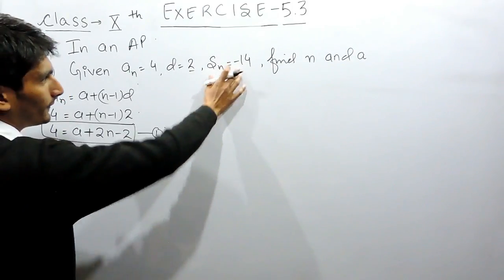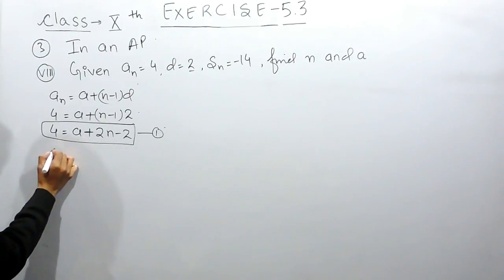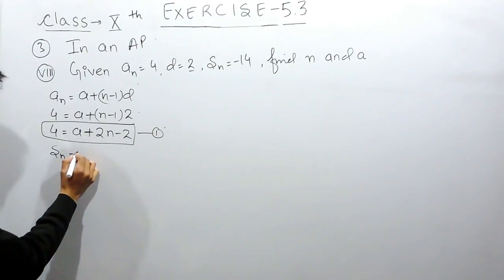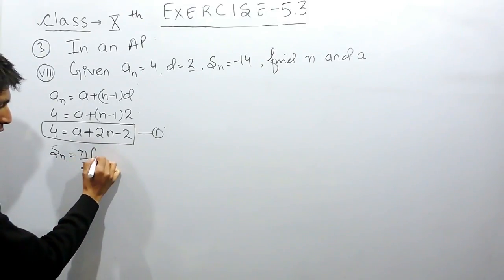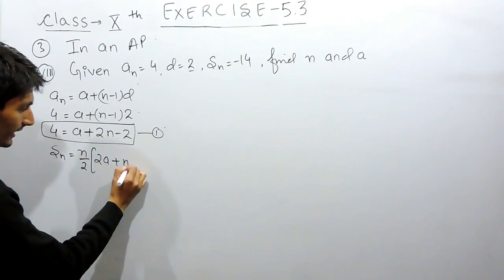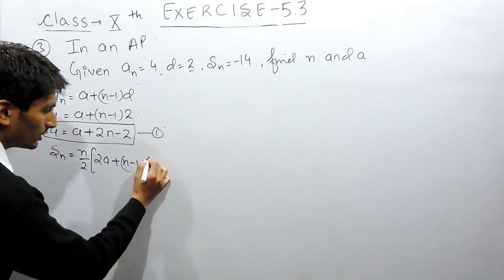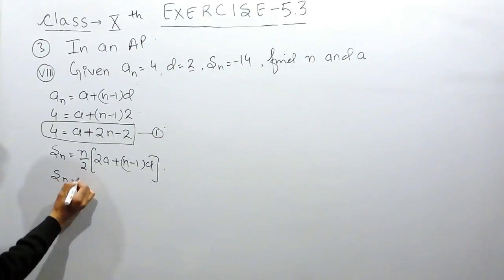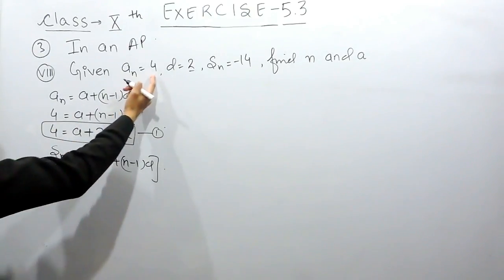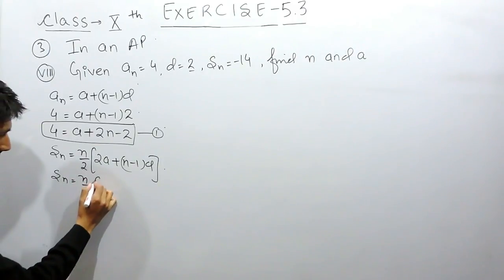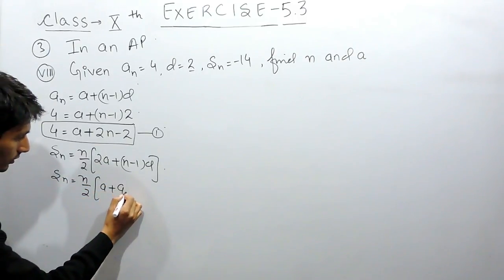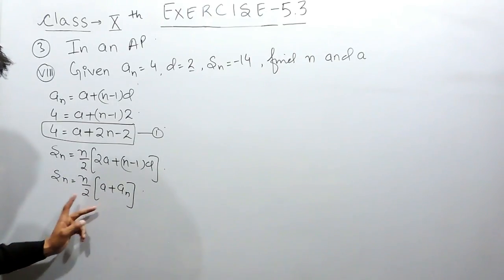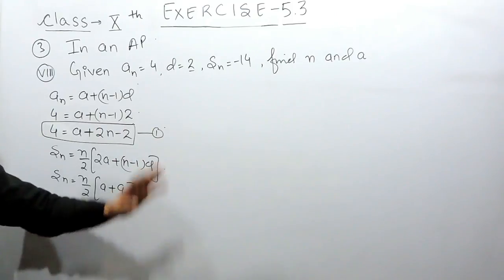Now, the sum of nth terms is also given. To find the sum of nth terms, we have a formula: Sn equals n by 2 times 2a plus n minus 1 into d. There is another formula when the nth term or the last term is given: Sn equals n by 2 times a plus an, where an is the last term.